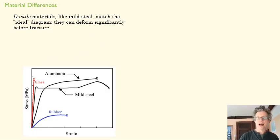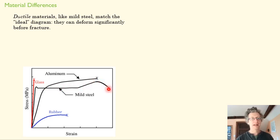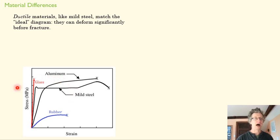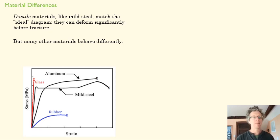Different materials have different stress-strain diagrams. The one we've been looking at resembles mild steel: elastic region, yielding region, strain hardening, and finally the necking region. That's what a ductile material looks like, but other kinds of materials have very different stress-strain diagrams.